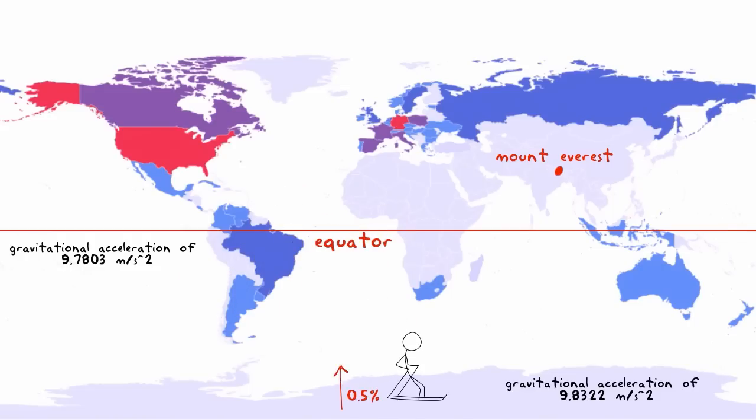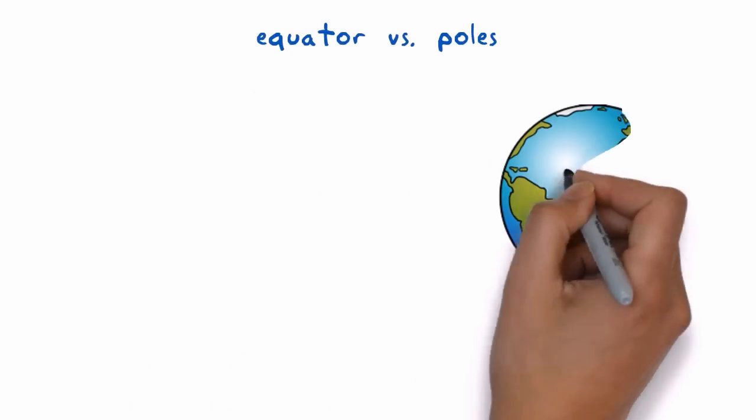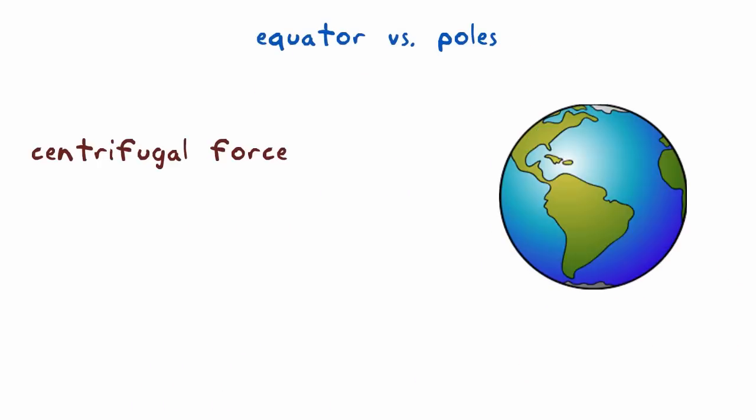There are two effects, both due to the spin of the Earth. Centrifugal force due to the spinning lowers your body weight by about 0.4% at the equator relative to its weight at the poles.